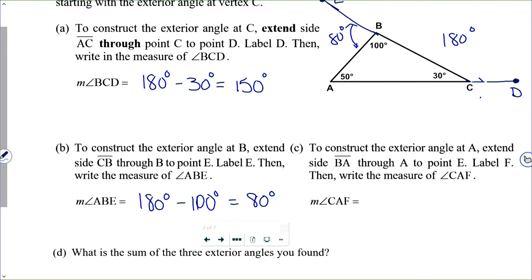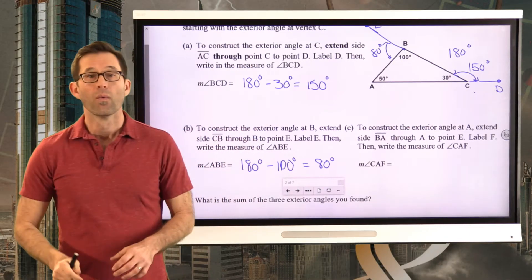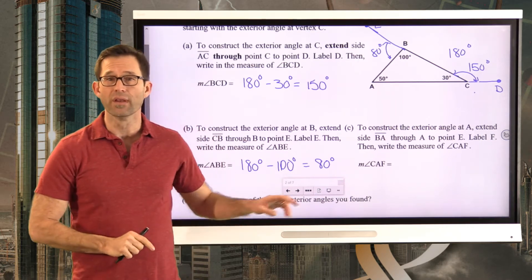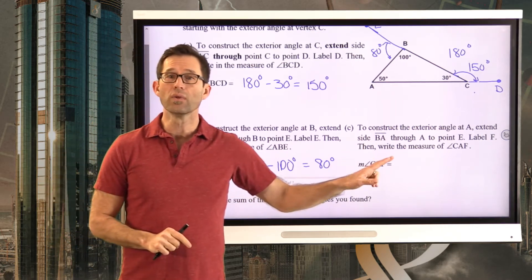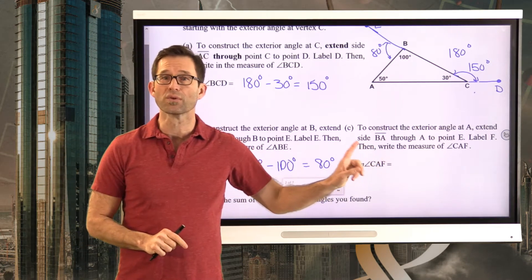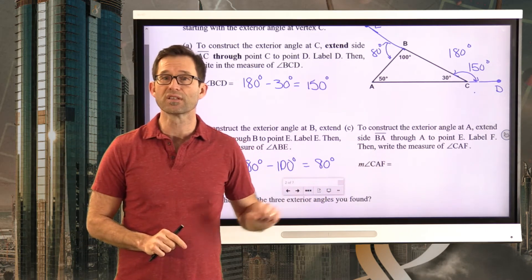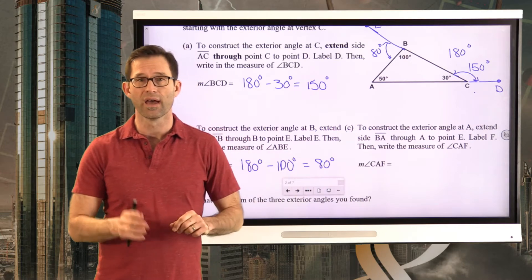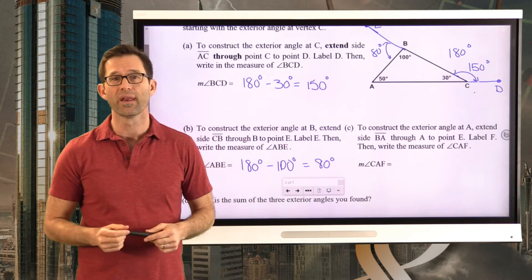Let's write the measure on the picture as well — this angle will be 150 degrees. What I'd like you to do now is pause the video and do letter C — construct the exterior angle at vertex A. Go ahead and do that now.